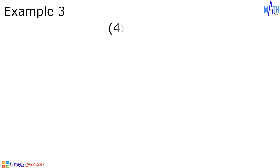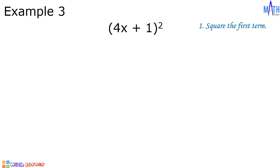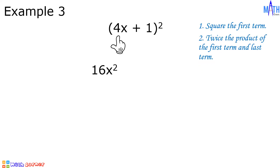Example number three: what is the square of 4x plus 1? Step number one: square the first term. 4x times 4x is equal to 16x squared. Step number two: twice the product of the first term and the last term. 4x times 1 is equal to 4x.